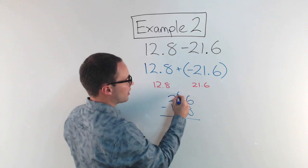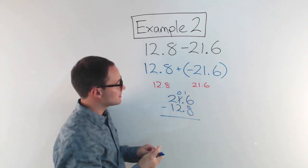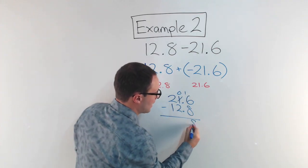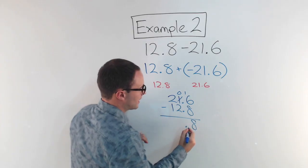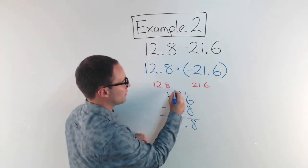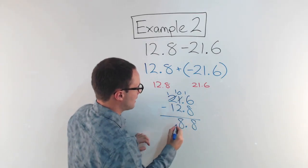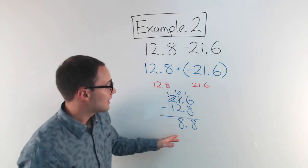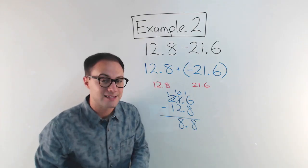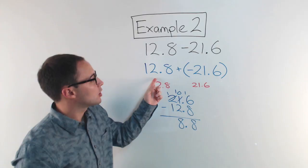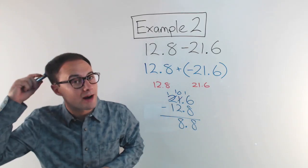I'm subtracting 12.8. I need to borrow, 0 becomes 16. Subtract, I get 8. Decimal points stay in line. I've got to borrow again. That becomes 10.8 and that's 0. Now, I need to remember, last step is I've got to look which one had the greater absolute value.